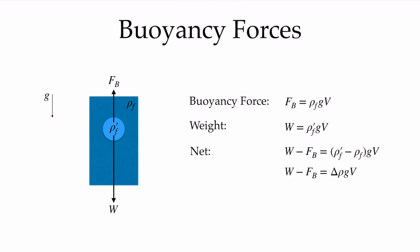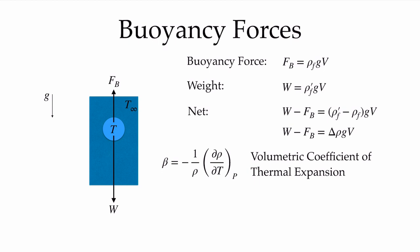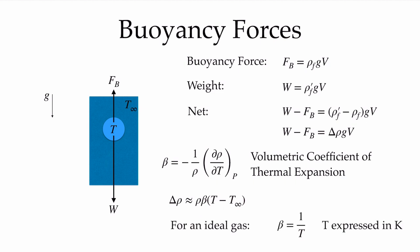The net force on a fluid particle that has a different density will be the change in density between that fluid and the rest of the fluid times g times the volume. To calculate what that change in density is, we need to introduce the volumetric coefficient of thermal expansion, beta, which tells us how the density changes with temperature at a fixed pressure. Our change in density can be approximately given by rho times beta times the temperature difference. For an ideal gas, beta is simply 1 over the absolute temperature in Kelvin. For other materials, it is a material property we look up.